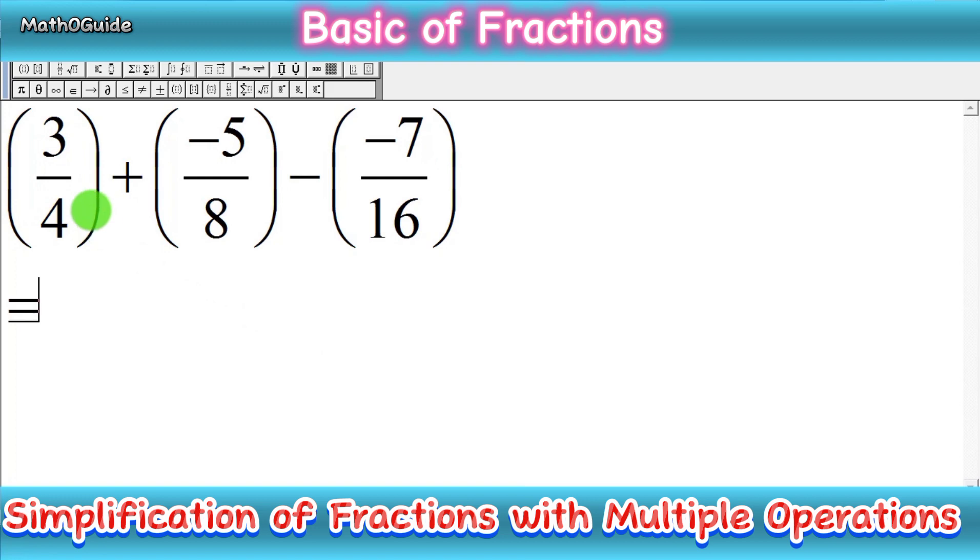First, we remove the brackets. The first fraction is 3/4 with no sign, so we simply write 3/4. Then we have a positive sign, and in the bracket we have a negative sign. Positive times negative is negative, so we write negative 5/8.